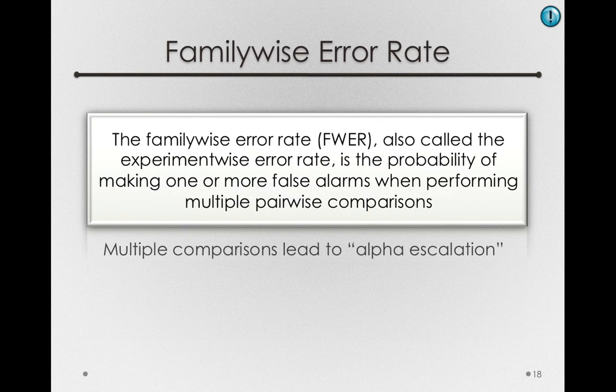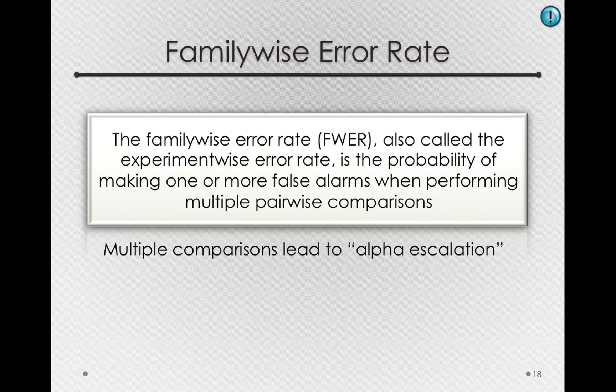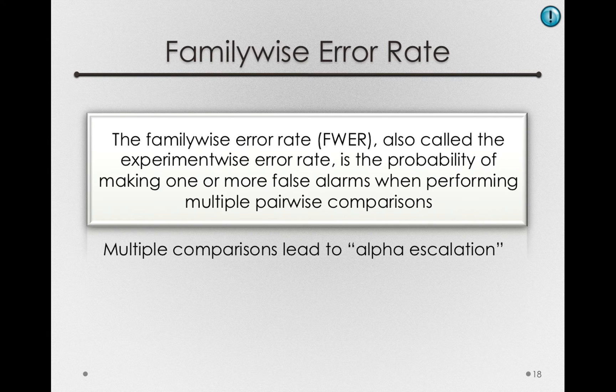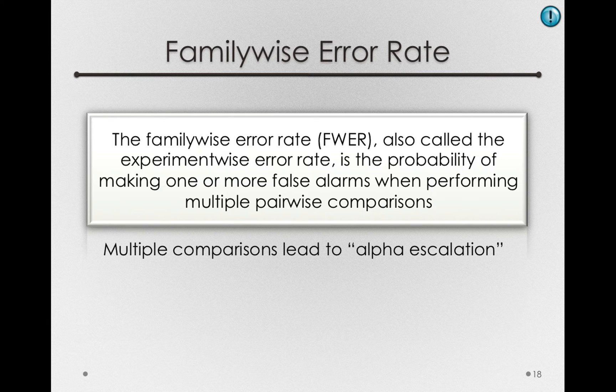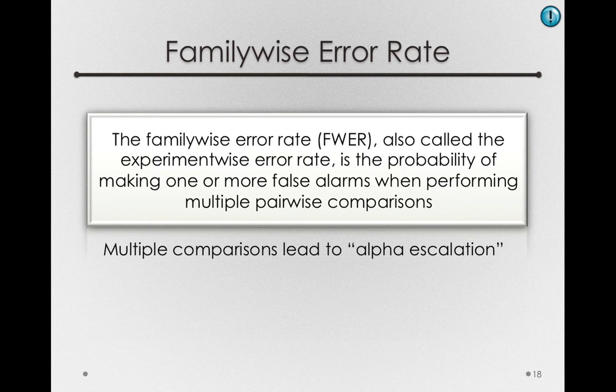The real problem is that multiple comparisons leads to alpha escalation. In other words, we're simply giving ourselves more opportunities to false alarm because we're doing so many tests. If each test has a 0.05 probability of false alarming, if the null is true, then over a large number of tests, the chance we'll make at least one false alarm is considerably higher than 0.05.